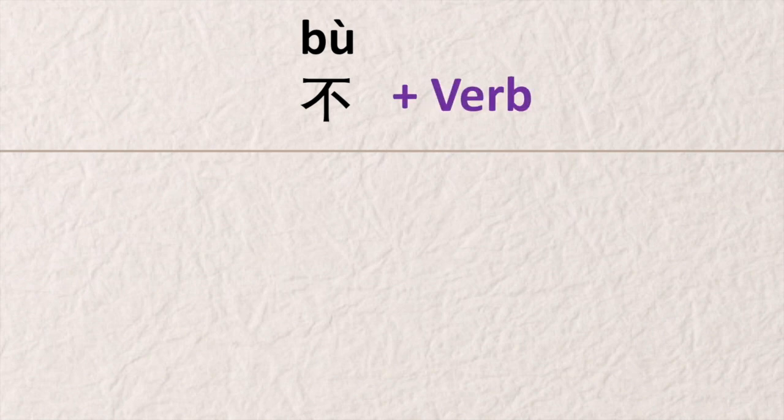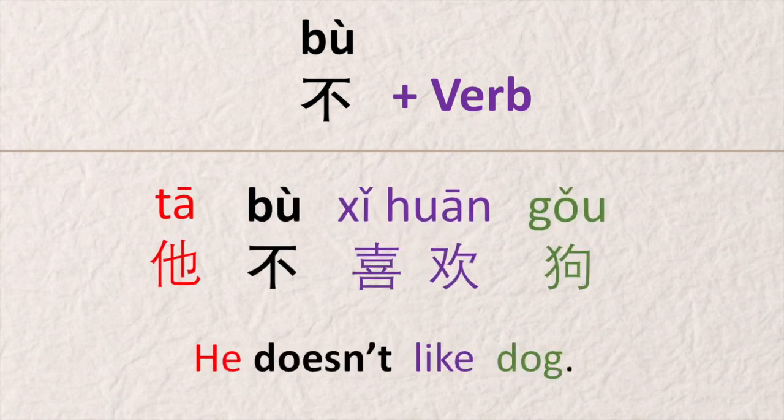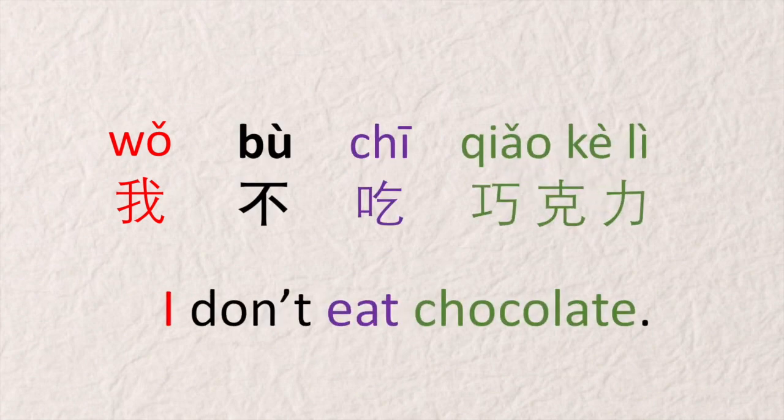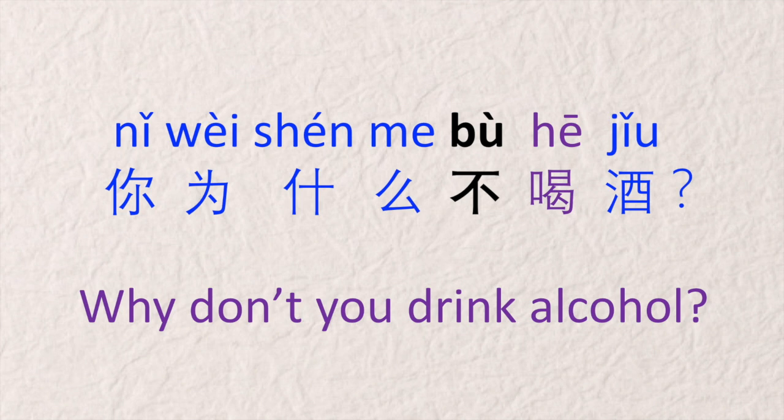不 is also used to negate verbs in the present or future, or to talk about habitual actions. We use the same structure: place 不 before the verb. For example, 他不喜欢狗 — 喜欢 is a verb — 他不喜欢狗, he doesn't like dogs. 我不吃巧克力. 你为什么不喝酒? Why don't you drink alcohol?